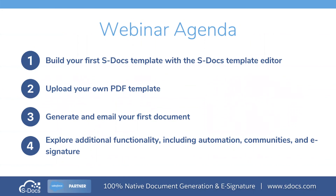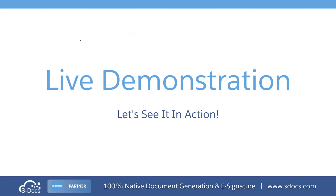For today's webinar, we are going to cover a few different topics. We will begin with what it looks like to build your first S-Docs template using the S-Docs template builder. The second thing we will look at is what it looks like to quickly upload your own PDF as a template. Third, we will look at what it looks like to actually generate and email our first document. And finally, we will explore some additional functionality, including things like community compatibility, electronic signature, automation, and so on. Throughout this demonstration, I encourage you to pop your questions into the chat, and we will address those following the live demonstration. Let's go ahead and hop into Salesforce, and we can see S-Docs in action.